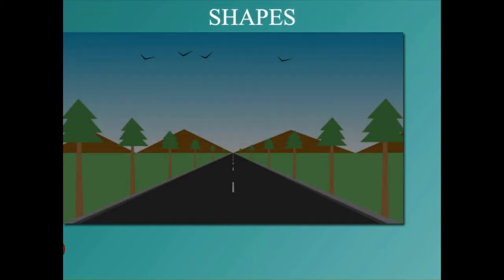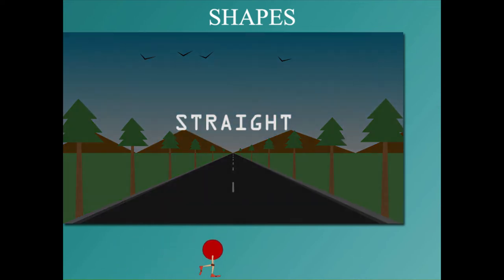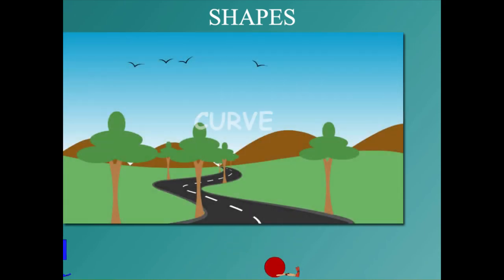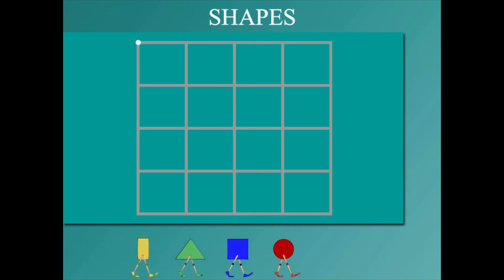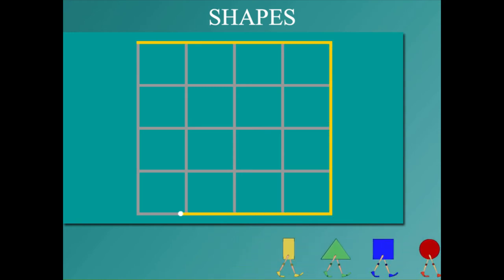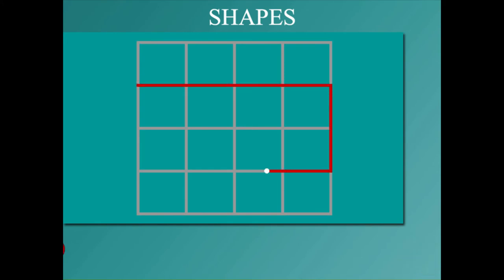Here are some shapes. Look at this road — it is straight. Now look at this road — it is a curved road. Watch this pointer making straight lines. This is a square with four straight lines. This is a rectangle with four straight lines.